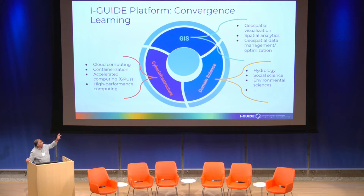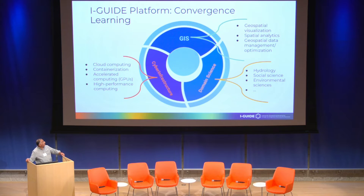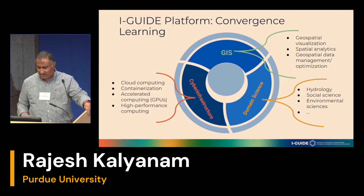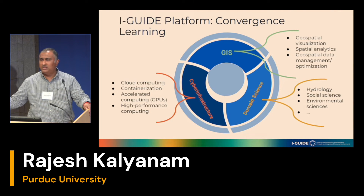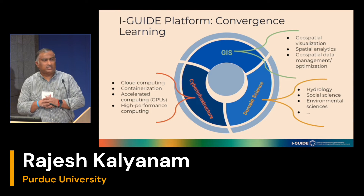Here's a different view of convergence learning. All the things on the platform are really a combination of three big pieces: GIS, domain science, and cyber infrastructure. The cyber infrastructure is behind the scenes, with all the hidden steps behind a workflow running on the platform. To make it interactive and useful, you need a GIS component for visualization, spatial analytics, and more. And since this is iGUIDE with a focus on convergent science, there's a lot of domain science involved from multiple disciplines — most examples on the platform involve different disciplines coming together to solve an actual science problem.